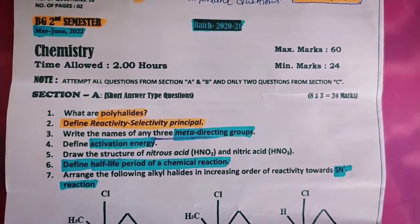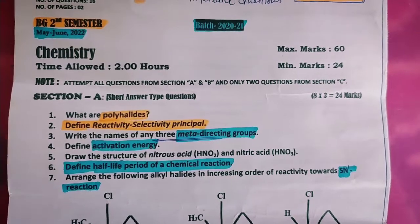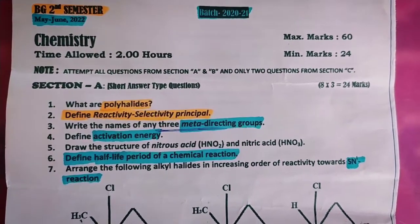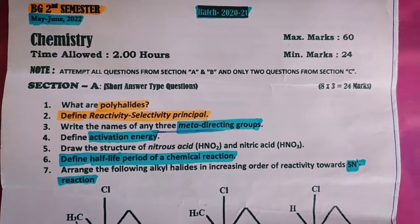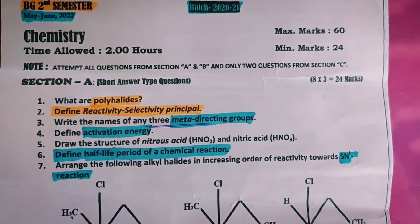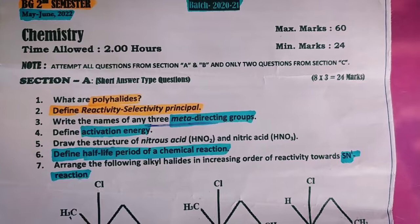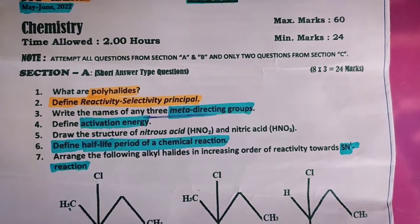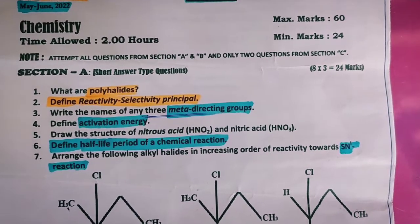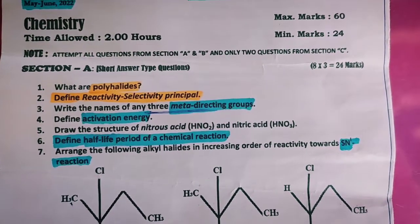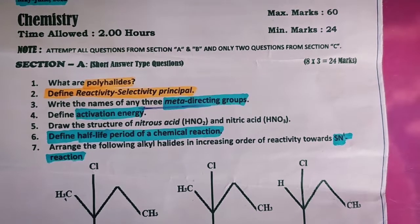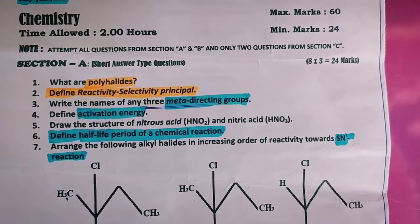Section A is short answer type questions carrying three marks each. What are polyhalides? Define reactivity-selectivity principle. Write the names of any three meta-directing groups. Define activation energy. Draw the structure of nitrous acid and nitric acid. Define half-life period of a chemical reaction. Arrange the following alkyl halides in increasing order of reactivity towards SN1 reaction.